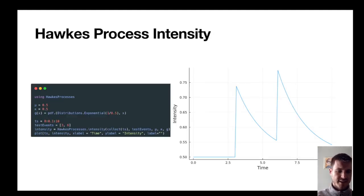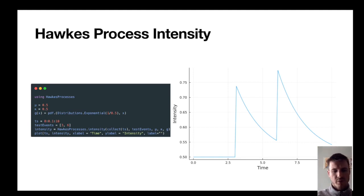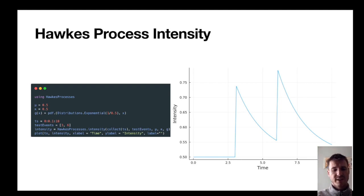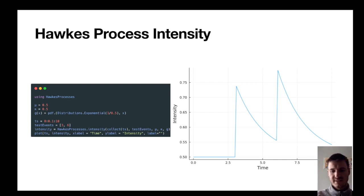Let's start with looking at an intensity. We define the background rate as 0.5, the kappa rate as 0.5 as well, and the kernel as an exponential distribution also parameterized by 0.5. We then create a time grid between 0 and 10 in 0.1 increments and two test events at 3 and 6. Passing all these parameters into the intensity function and plotting the result gives the graph on the right, and we can see these increases in intensity over time with each event.